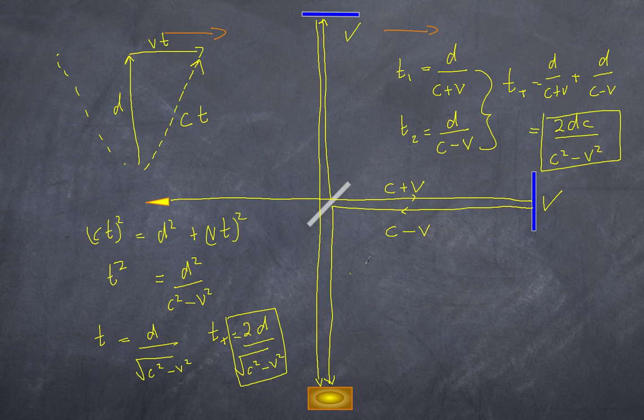And as they rotated this apparatus around, the differences in interference would differ as well, because the mathematics would slightly be different, and you would get a change in the interference pattern. And what happened was there was no change interference patterns whatsoever, which suggested that the light was arriving at the same time, no matter what.